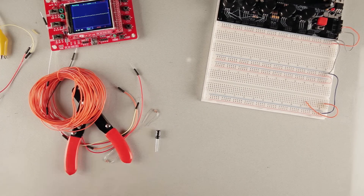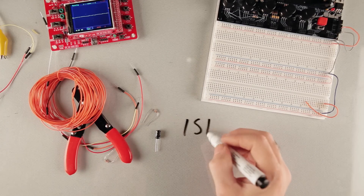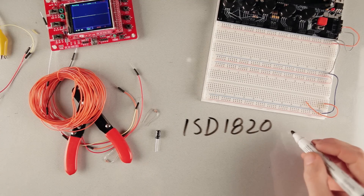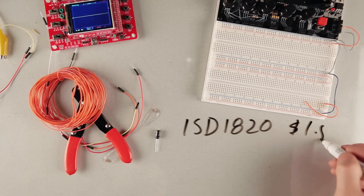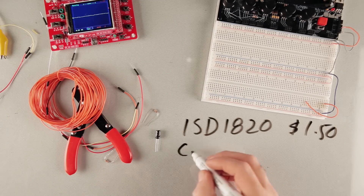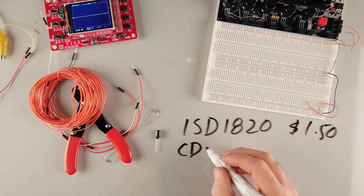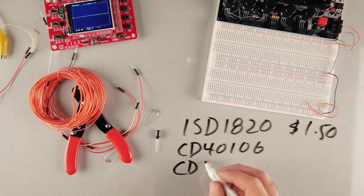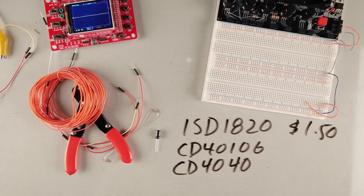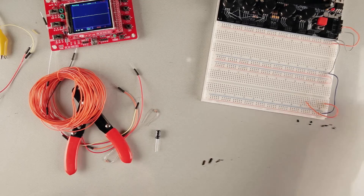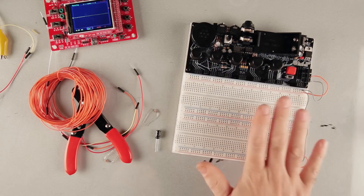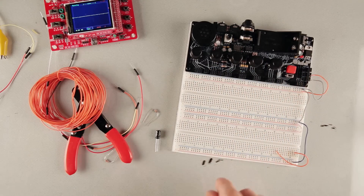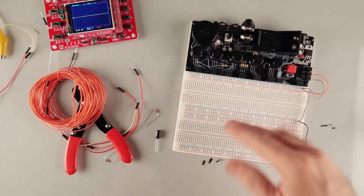We're also going to be using a couple different ICs. We're going to use the ISD-1820 — this is a really common and really cheap voice recording IC, maybe like $1.50 or even cheaper. And then, like in the last two videos, we're going to use the CD40106 and the CD4040. You're going to need a breadboard and a power supply. I'm using the OhmSynth here, so I've got two breadboards, my power supply, speaker, and a couple of controls.